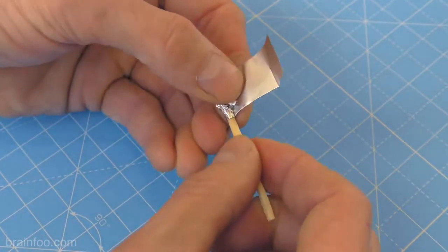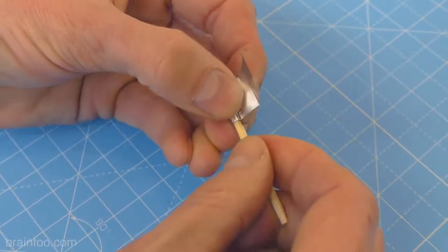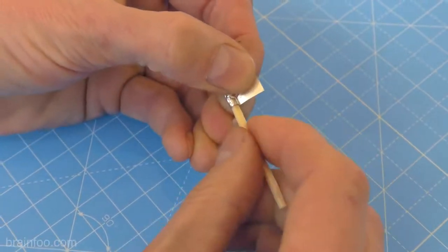Now roll it up finger tight, keeping a nice pinch of pressure as you go. And it's important not to let the foil creep down the wood of the matchstick. Roll it up nice and parallel.